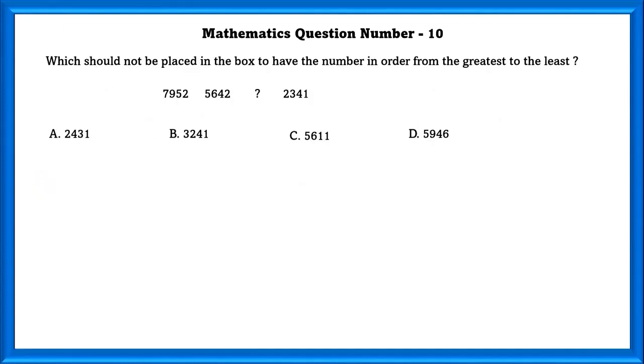Mathematics Question Number 10: Which of the following not be placed in the box to have the number in order from the greatest to least? We have to arrange this from greatest to least, that is, descending order. If we check, D is the only option corresponding to this rule.